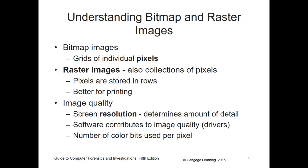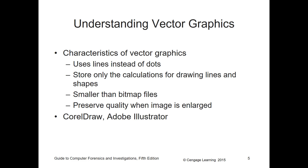Image quality is important. Screen resolution, software contributions, and number of color bits used by individual pixels all affect image quality. Vector graphics use lines instead of dots and store only the calculations for drawing lines. They're smaller than a bitmap but preserve quality when an image is enlarged.